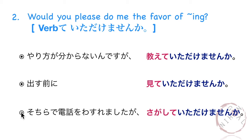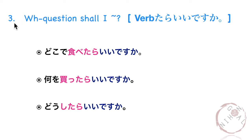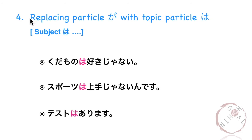WH questions: Shall I...? Using verb たらいいですか？For example: どこで 食べたらいいですか？何を 買ったらいいですか？どうしたらいいですか？Also: replacing particle が with topic particle は — subject followed by は and then the information.